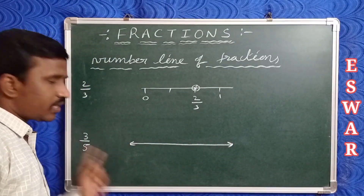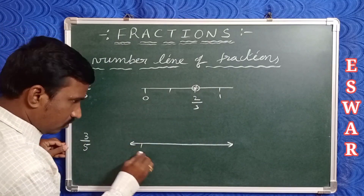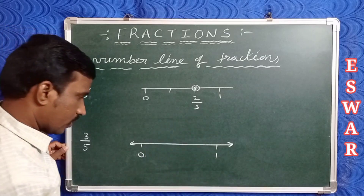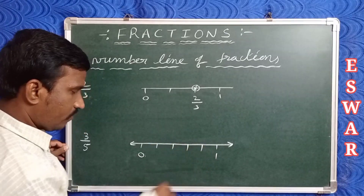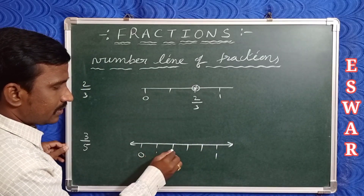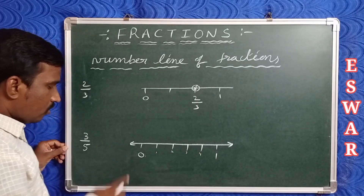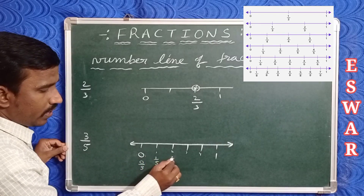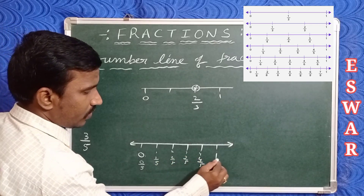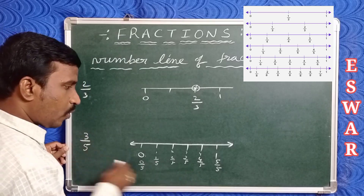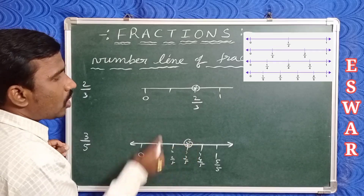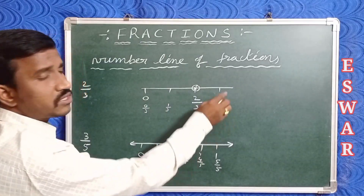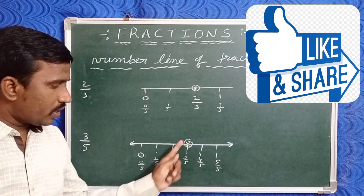Now take one more example: three by five on a number line. This also lies between 0 and 1. Divide 0 to 1 into five equal parts: 1, 2, 3, 4, 5. The points are 0 by 5, one by five, two by five, three by five, four by five, five by five which equals 1. So the third point indicates the fraction three by five.